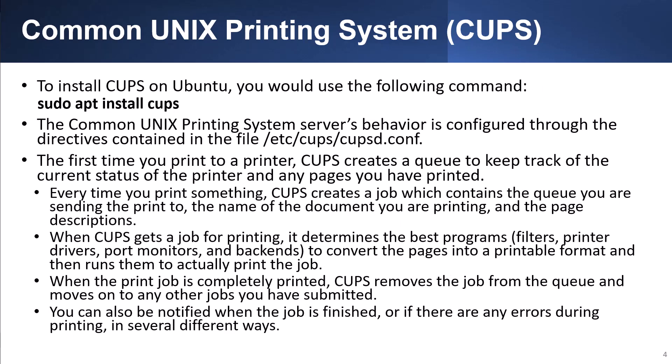To install CUPS on Ubuntu, you would use the following command: sudo apt install cups. The Common Unix Printing System service behavior is configured through the directives contained in the file /etc/cups/cupsd.conf. The first time you print to a printer, CUPS creates a queue to keep track of the current status of the printer and any pages you have printed. Every time you print something, CUPS creates a job which contains the queue you are sending the print to, the name of the document you are printing, and the page descriptions.